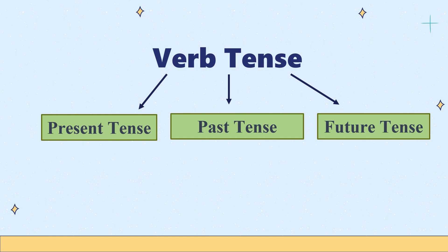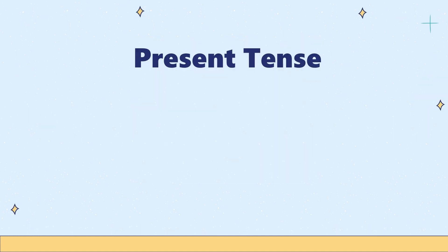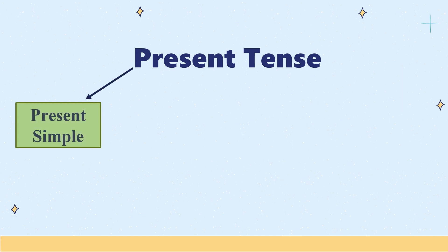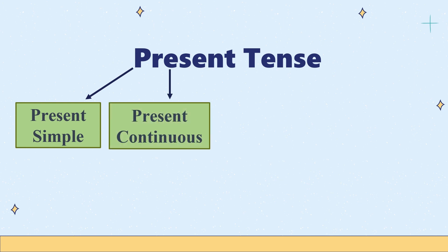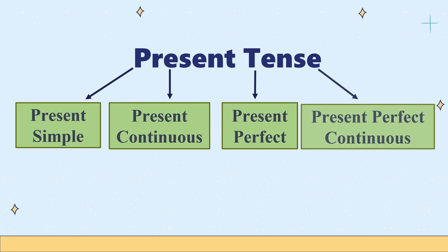Let's dig deep into present tense. Present tense is further divided into four categories: one, present simple; two, present continuous; three, present perfect; and fourth, present perfect continuous.